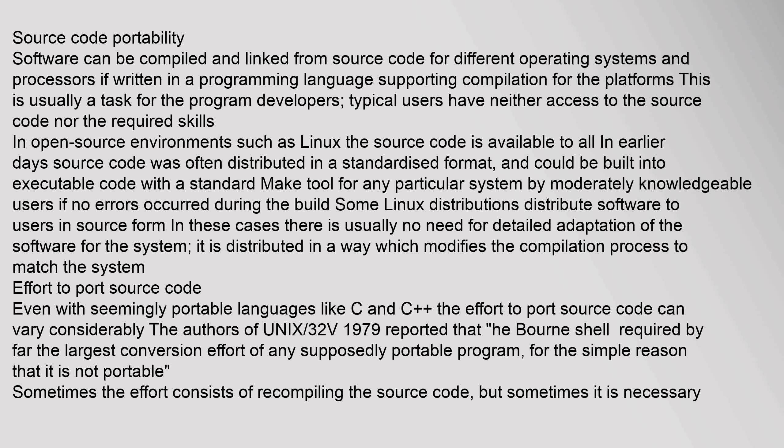In open source environments such as Linux, the source code is available to all. In earlier days, source code was often distributed in a standardized format and could be built into executable code with a standard make tool for any particular system by moderately knowledgeable users, if no errors occurred during the build. Some Linux distributions distribute software to users in source form, where there is usually no need for detailed adaptation — it is distributed in a way which modifies the compilation process to match the system.